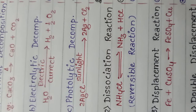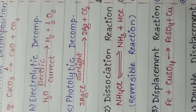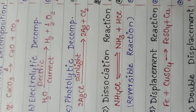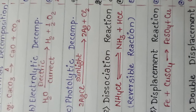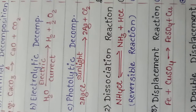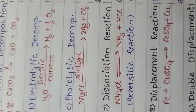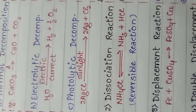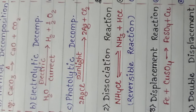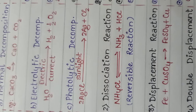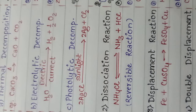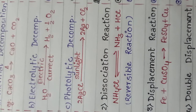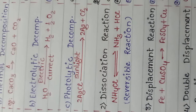Next one is photolytic decomposition reaction. When a decomposition reaction is carried out by sunlight, it is called photolytic decomposition reaction. For example, silver chloride in the presence of sunlight decomposes to form a precipitate of silver and chlorine gas.